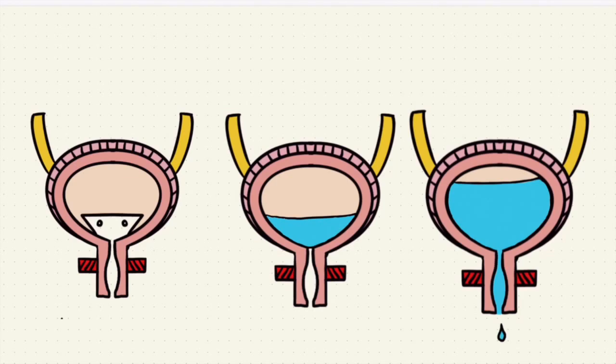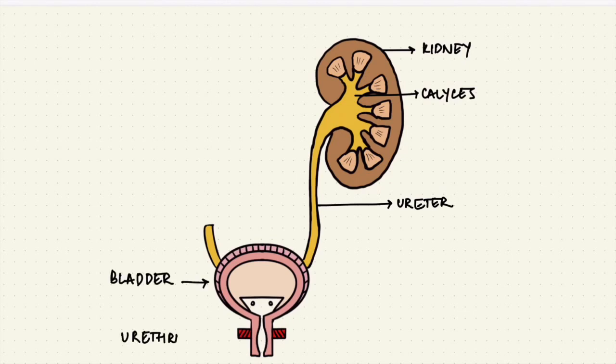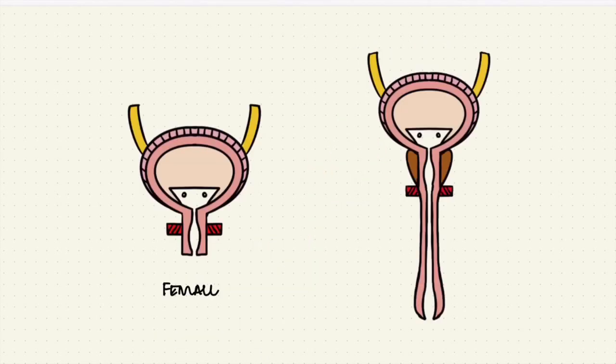Let's take a look at the structure a bit first. That's the kidney with the calyces and the ureter, the bladder and the urethra. Females have a shorter urethra than males.